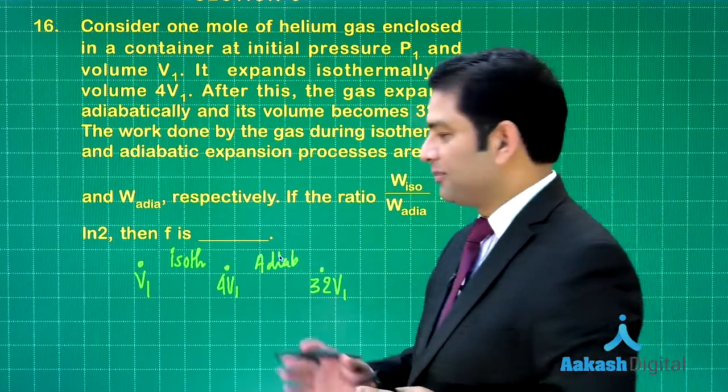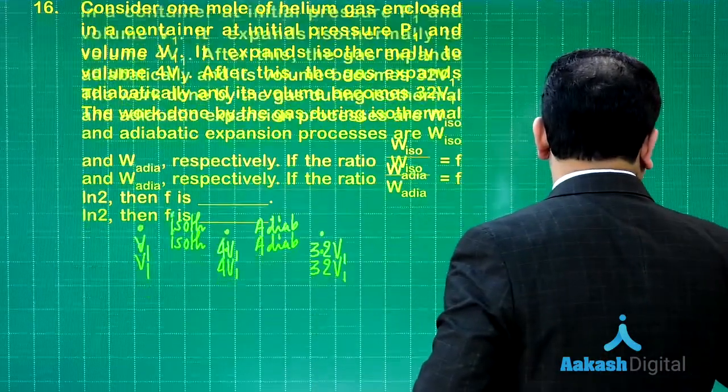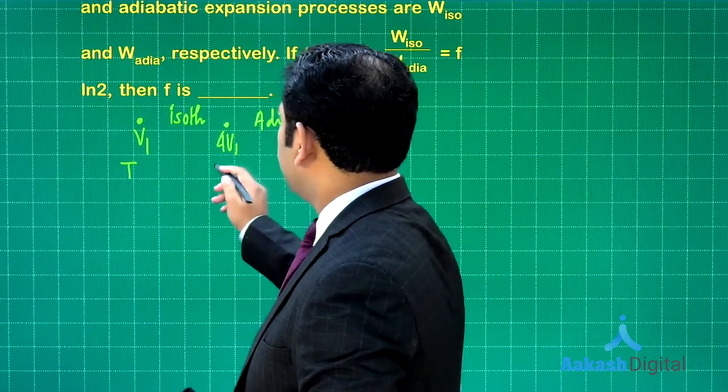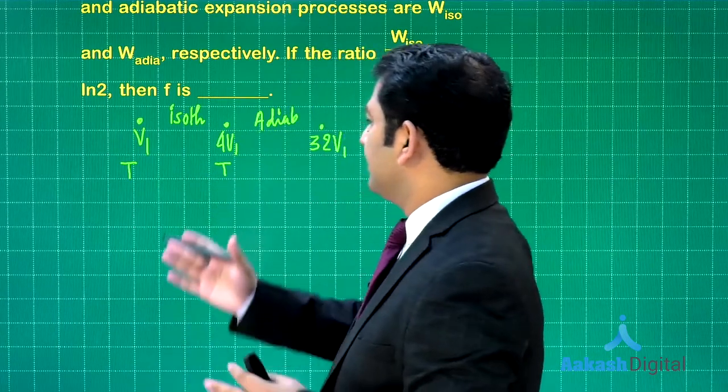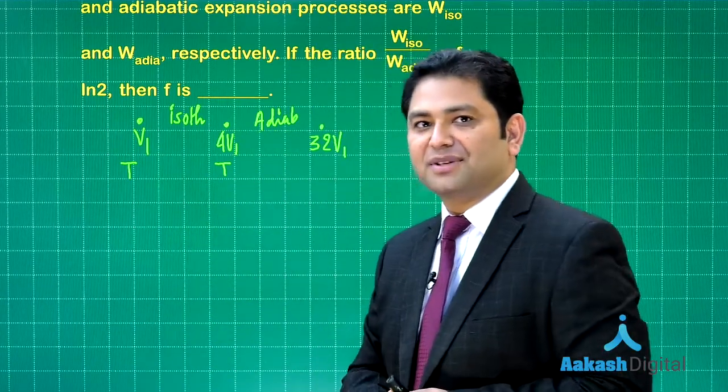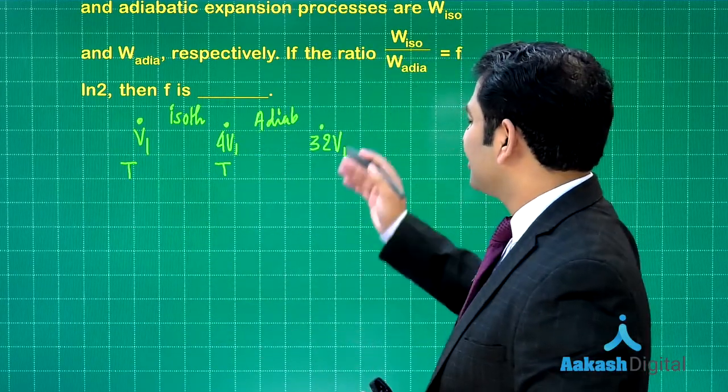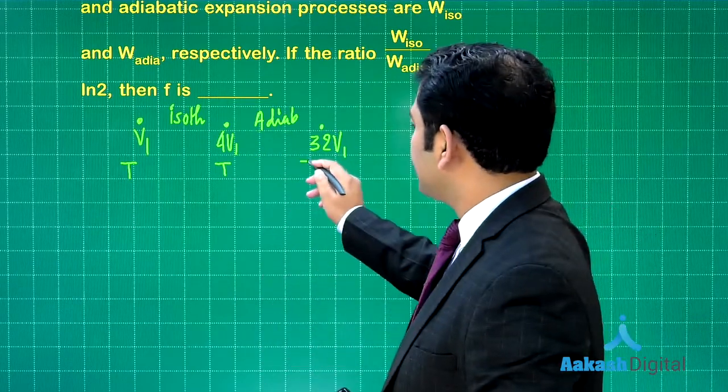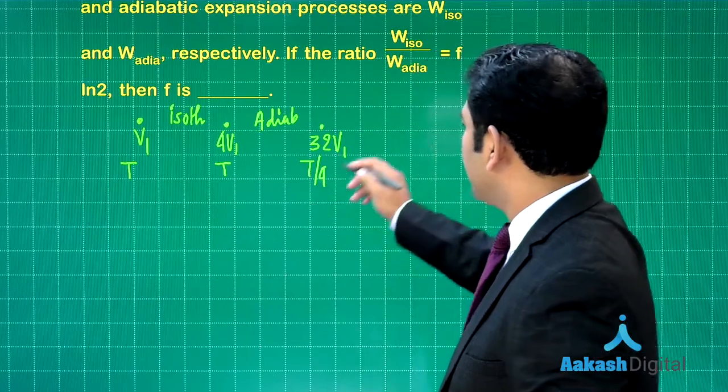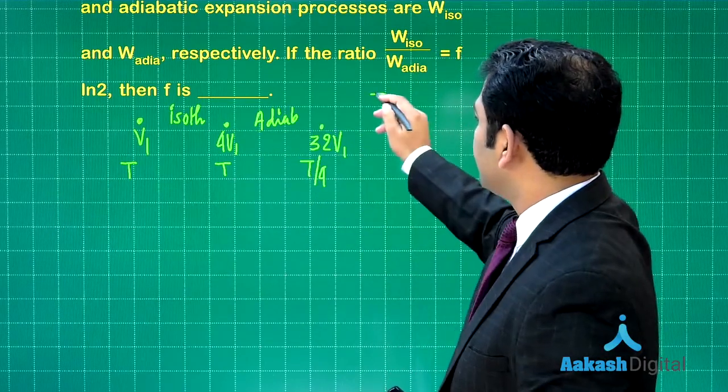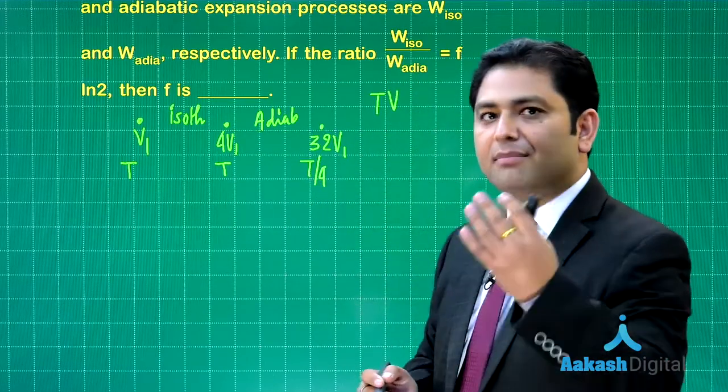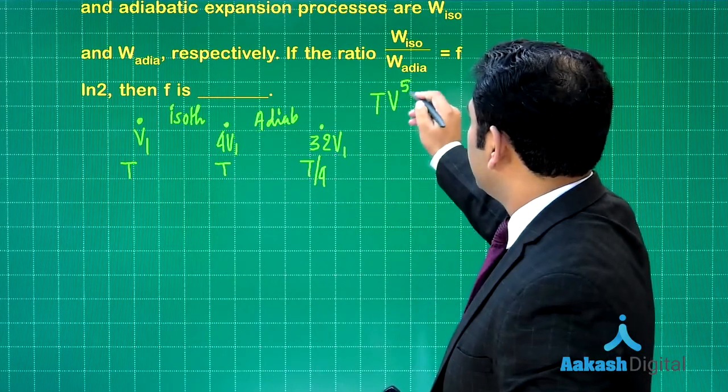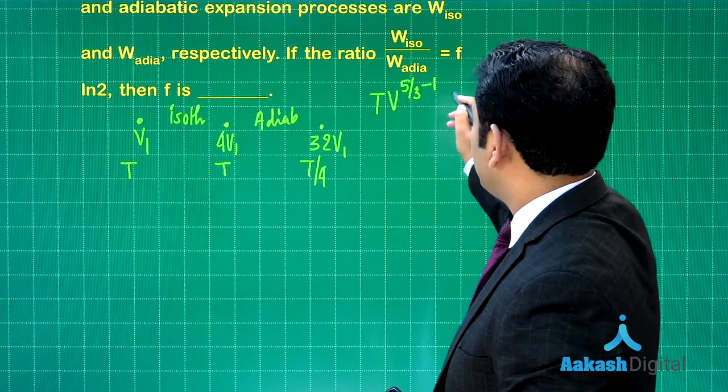In the first situation, I'll assume if the temperature here is T, the temperature here would also be T. Straightforward isothermal. Now you can see the temperature will decrease. It's an adiabatic expansion, and if you calculate that, it will be T by 4. For the adiabatic you can use TV^(γ-1) constant, and since it's monoatomic, 5/3 minus 1 will be constant.